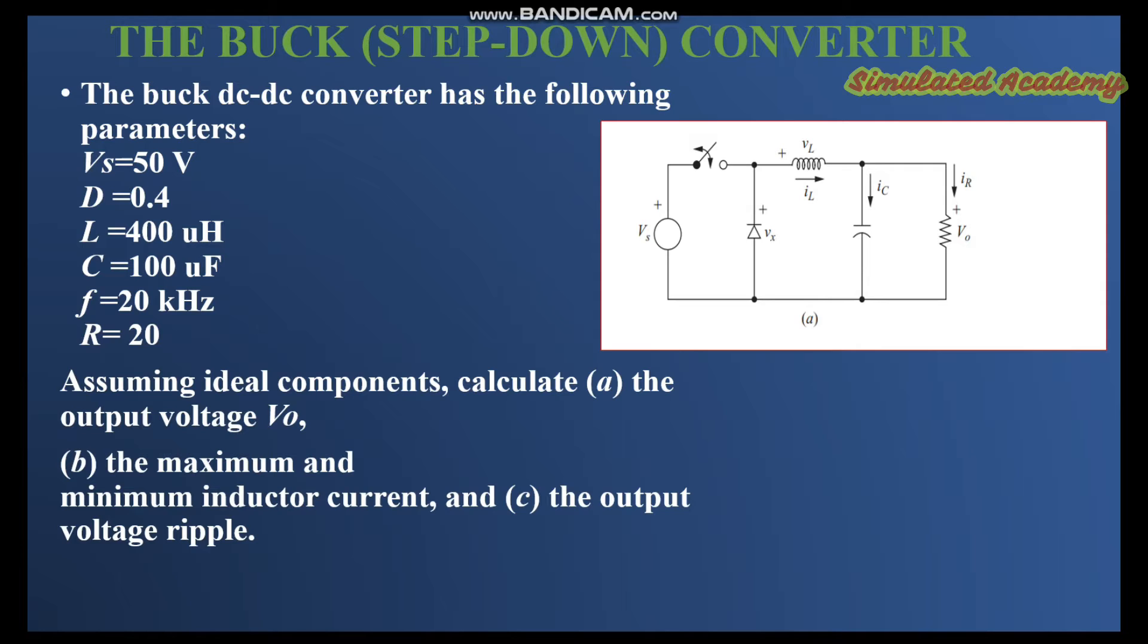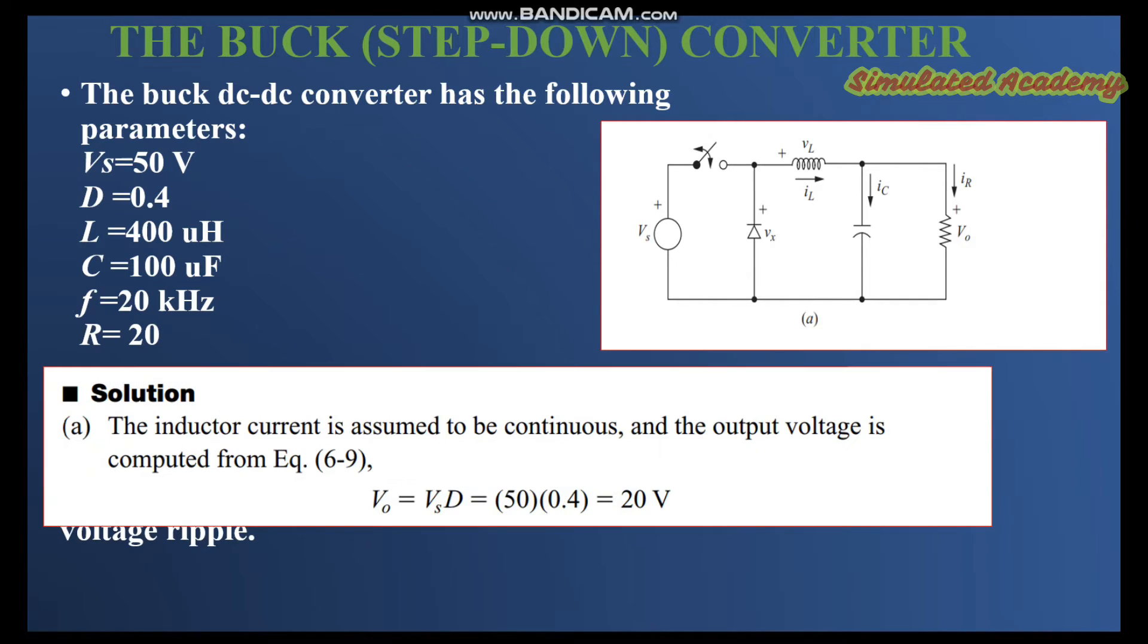So let's solve part A. Part A can easily be solved by just memorizing and remembering the transfer function for the buck converter. It says that V0 equals V supply times D. I have the value of Vs equal to 50 volts and the duty cycle of 0.4, so V0 would come out to be 20 volts. Part A is done.